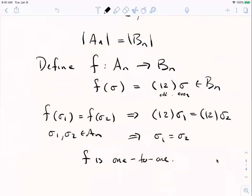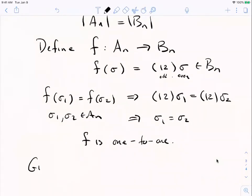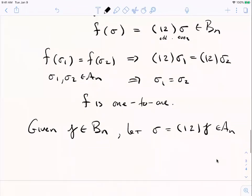I also claim F is onto. If you give me, say, some odd permutation, give me some odd permutation in S n, I'll let sigma be, say, one, two times it. An odd times an odd is even. So sigma is an A n. And let's just check out what F of sigma is. F of sigma is, well, one, two times sigma. Sorry. No, it's not.